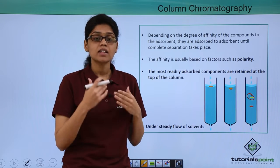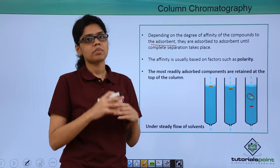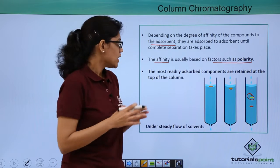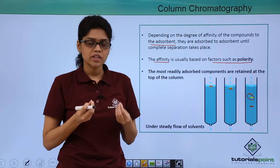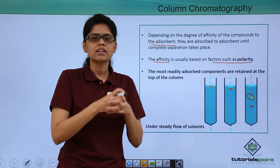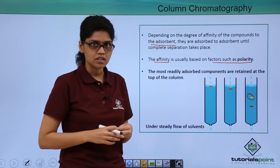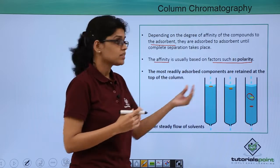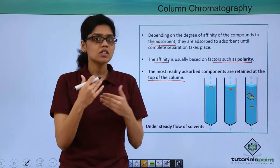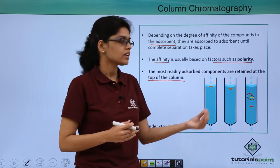Depending on the degree of affinity of the compounds to the adsorbent, they are adsorbed to different degrees until complete separation takes place. This affinity is usually based on factors like polarity. If we have a very polar adsorbent and our compound of interest is also highly polar, then as it is eluted using a solvent it gets strongly attracted to the adsorbent, and due to this strong interaction the compound gets retained at the top of the column. The most readily adsorbed components are retained at the top. If the adsorbent is polar but the compounds in the mixture are not very polar, the interaction is not strong and the compound will simply elute down and be collected at a lower part of the column.